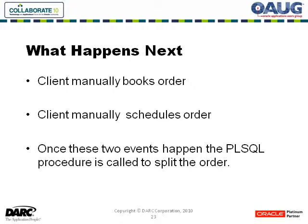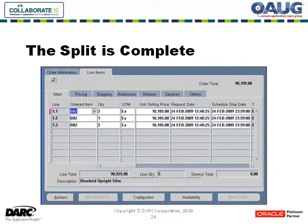The client manually books the order and manually schedules the order. Once these two events happen — part of their business process — the PL/SQL procedure is called to split the order. This can be done either via automation or the user can go into the tools menu and fire the split line procedure. Once the procedure is completed, the game is split into its desired assemblies so it can be progressed and sent to manufacturing. After it's progressed, each ATO item gets its unique assembly and all the parts run through standard Oracle.